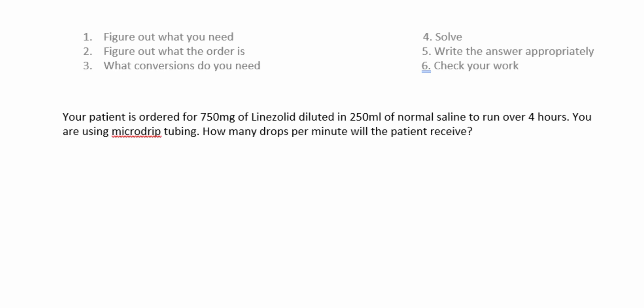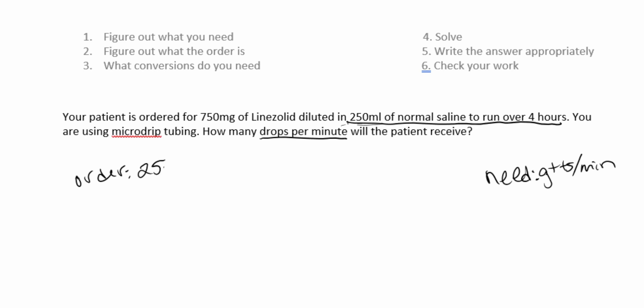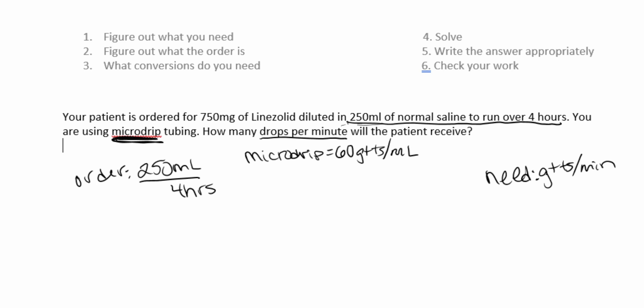Your patient is ordered for 750 mg of linezolid diluted in 250 mL of normal saline to run over four hours. You are using micro drip tubing. How many drops per minute will the patient receive? First, what do we need? Drops per minute. What is ordered? We actually don't need the 750 mg — we need the volume: 250 mL over four hours. We also know that micro drip tubing is always 60 drops per mL, and we'll need to convert one hour equals 60 minutes.